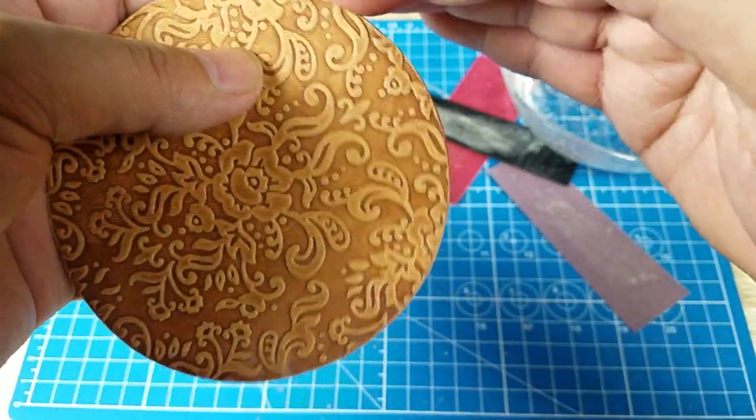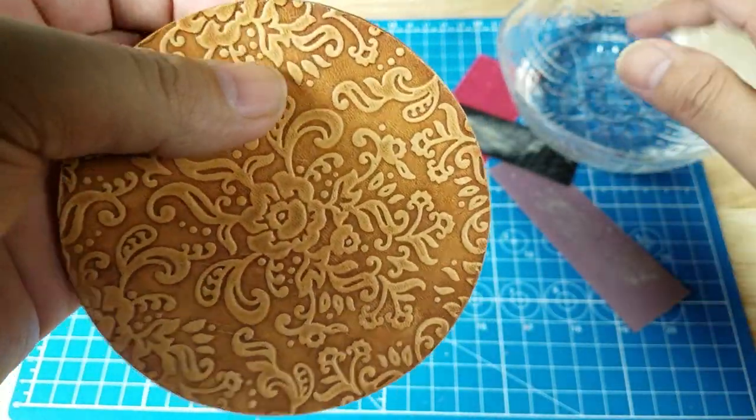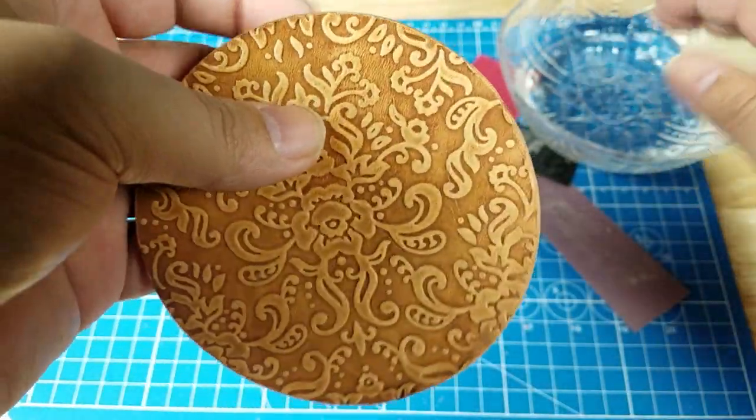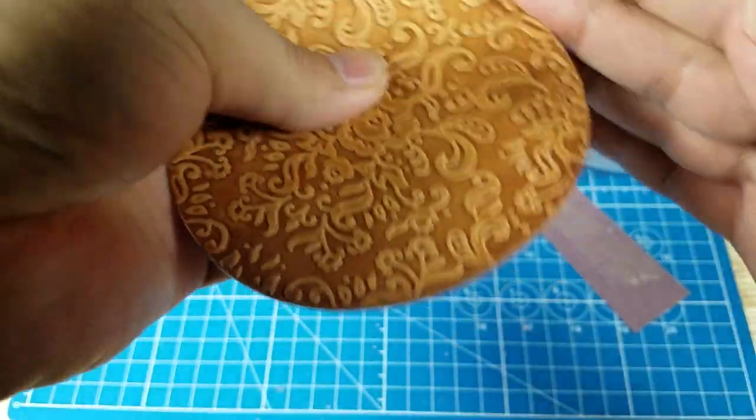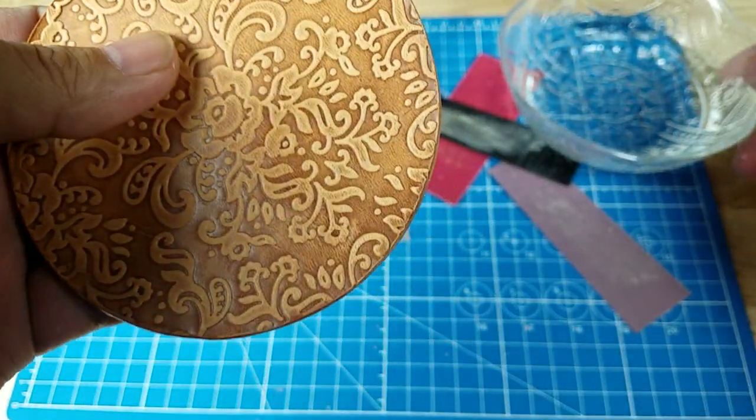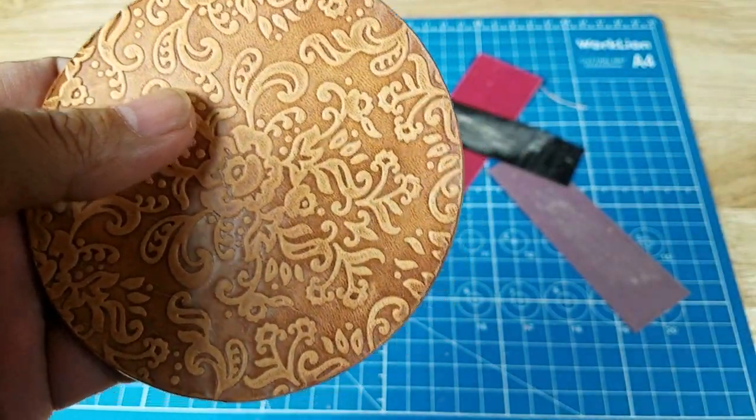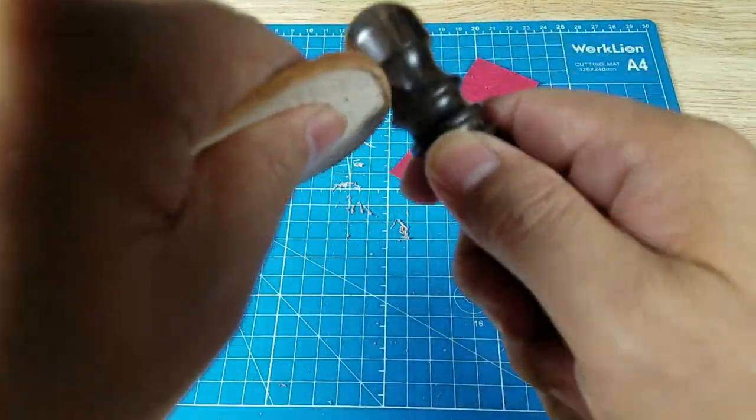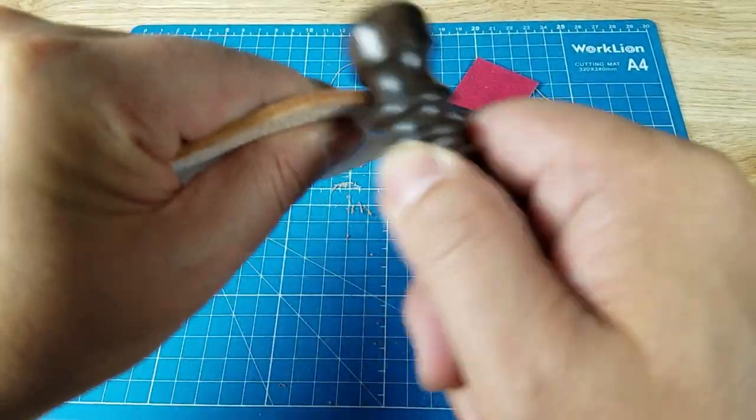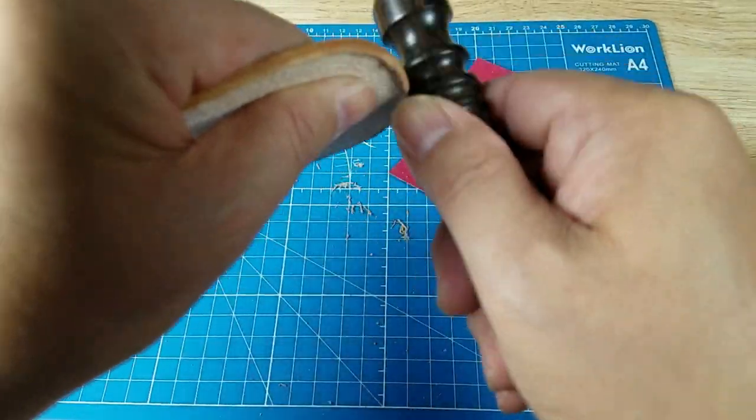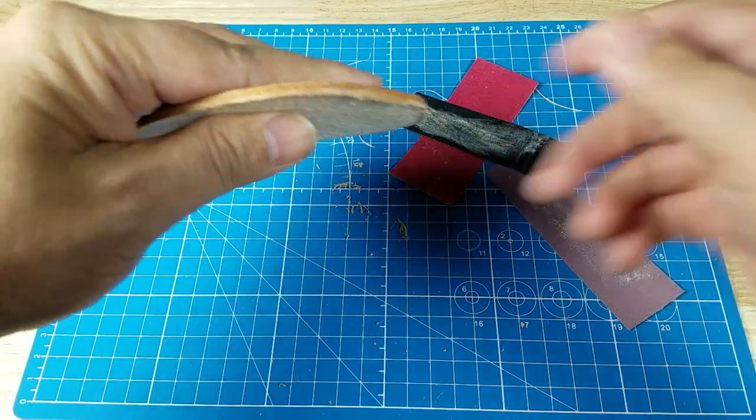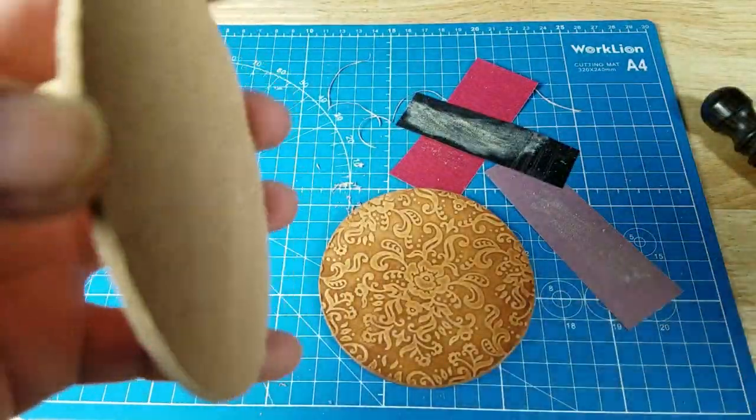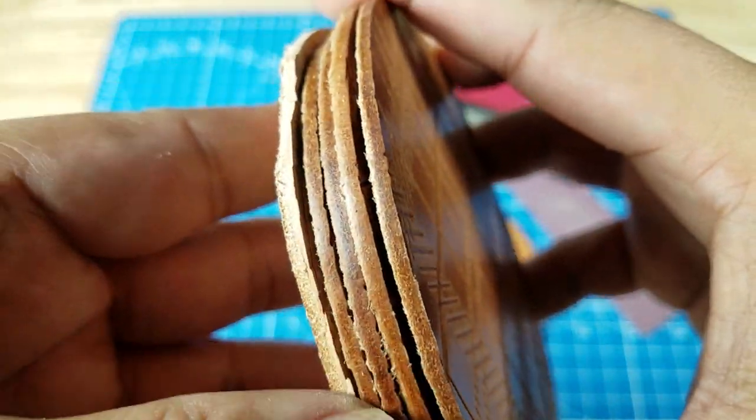We're gonna take care of these edges next with a quick water burnish. Just water here, I'm just gonna take my finger and run it around the side. Then we're gonna use a wood burnisher or wood slicker to shine up those edges. I'm gonna fit it right down in here and this is gonna shine up the edges so instead of looking bare it'll have a nice shine and finish.